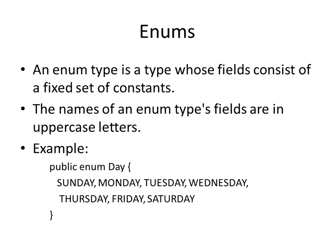So if I have an enum which represents a day of the week, and I am calling that enum as Day, all the days of the week are from Sunday all the way to Saturday: Sunday, Monday, Tuesday, Wednesday, Thursday, Friday, Saturday. And they are all listed out comma separated.